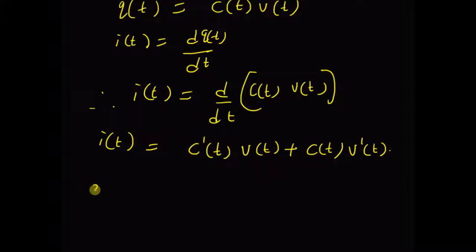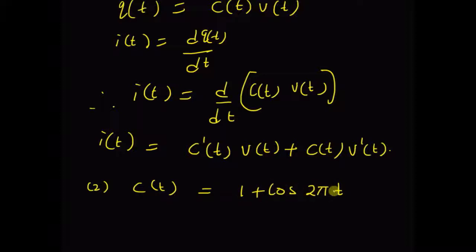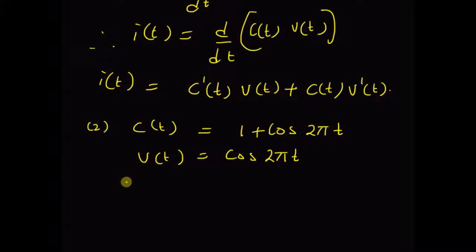Next, for a given C(t) equal to 1 plus cos(2πt), and the input voltage v(t) defined as a sinusoid cos(2πt), we want to derive and show the output current i(t).